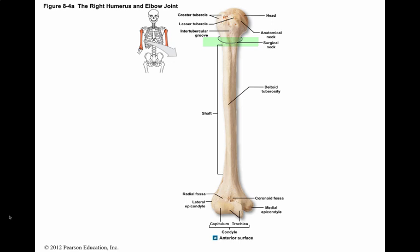The surgical neck is named as such because fractures typically occur at this site. The shaft of the humerus has a large, rough elevation on the lateral surface called the deltoid tuberosity, located about midway down the shaft, where the deltoid muscle attaches to the humerus.